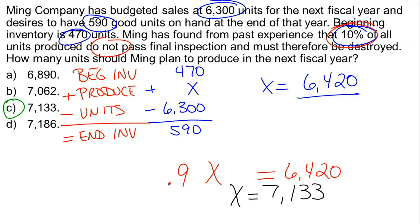Two steps to this question. We need to figure out first of all how many good units we need to produce, and then the correct answer is how many units do we need to start production on in order to be able to do all of this, given the fact that 10% of all the units that we start production on are not actually going to be completed and pass final inspection. So a two-step question. Neither of the steps are difficult. It's just important that we recognize there's two steps, which we will, because after the first step what we get isn't one of the choices. So when we do both steps, we get the correct answer, which is 7,133 units—how many units Ming needs to start in order to achieve their goals for sales and ending inventory.